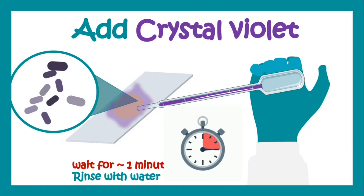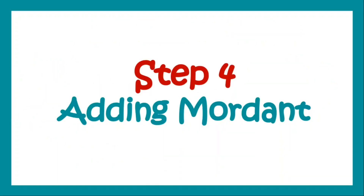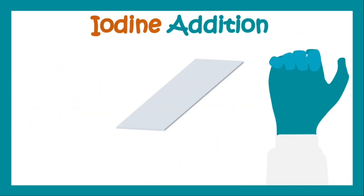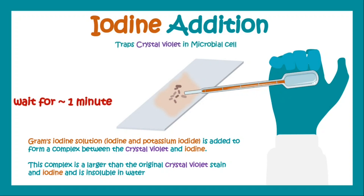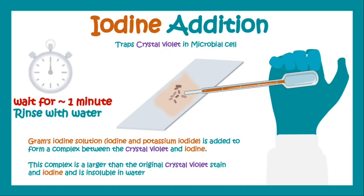Moving on, step four is adding the mordant. Iodine is the mordant — we add Gram's iodine solution on the rinsed slide with a dropper. The iodine forms a complex with crystal violet, and this complex is larger than the original crystal violet, which helps in the retention of the iodine-crystal violet complex within the microbial cell, trapping crystal violet inside. We wait for one minute and rinse with water.